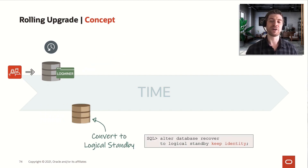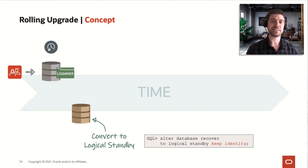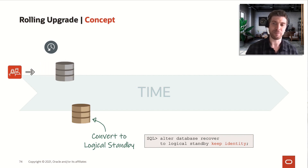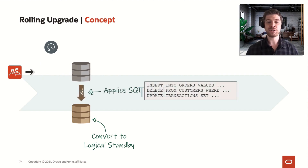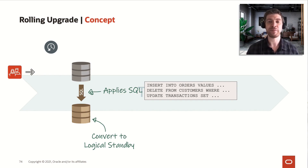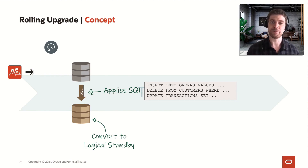Next, we convert the physical standby database into a logical standby database. In this step, it's very important to keep the KEEP IDENTITY clause, because this will ensure that our logical standby database has the same DBID as the primary. After this conversion, the scenario we have is our primary database shipping redo logs to the logical standby database, and the SQL apply process reading those redo log files and converting them into SQL statements, as you can see here.